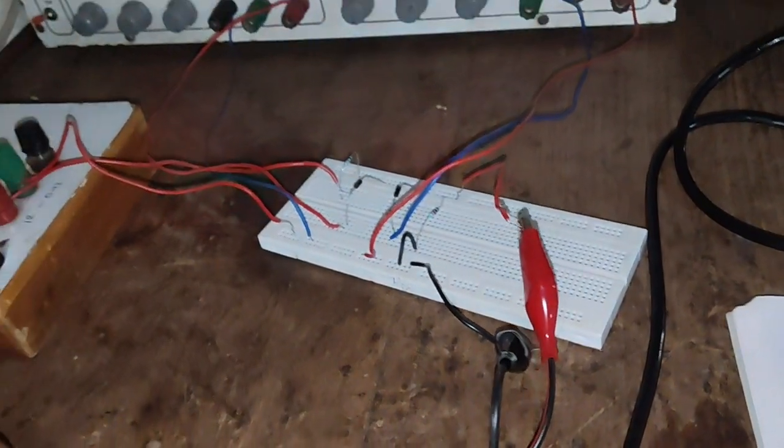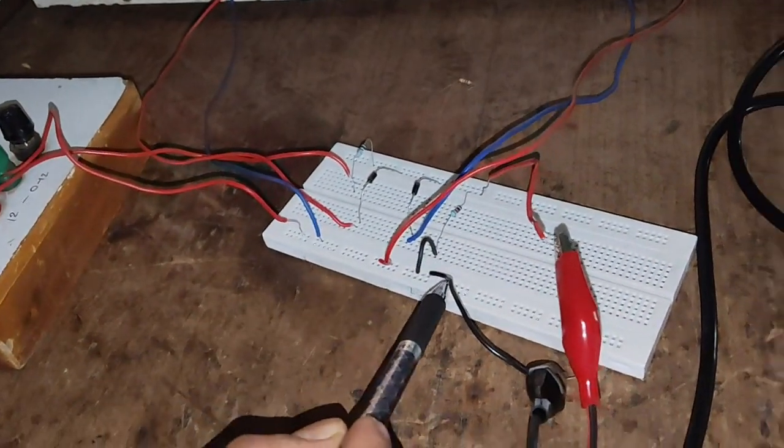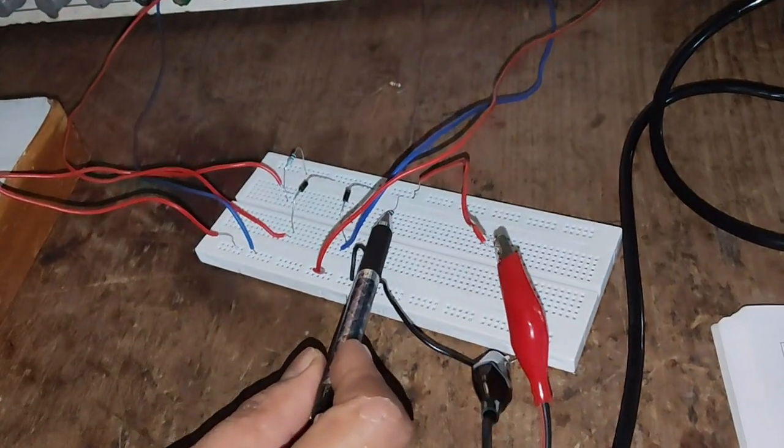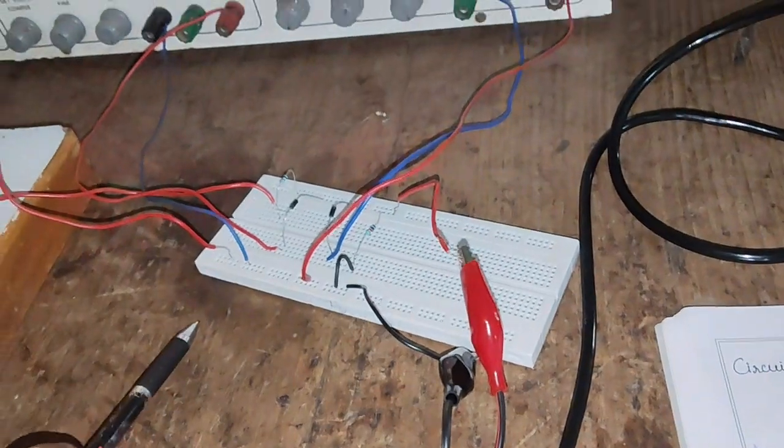With the help of a transformer, we are applying the AC signal, and the output is obtained across the load resistor R1. Now first, we will check the input waveform on the CRO.